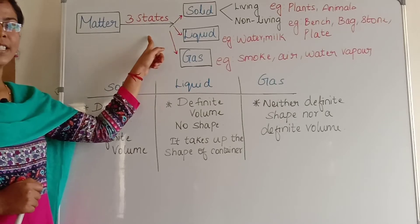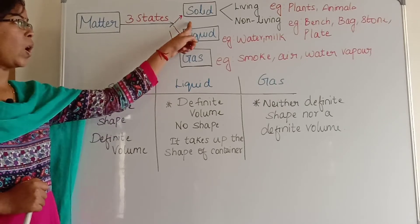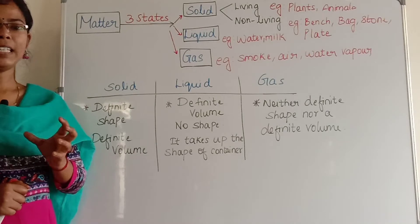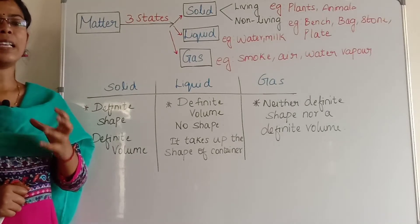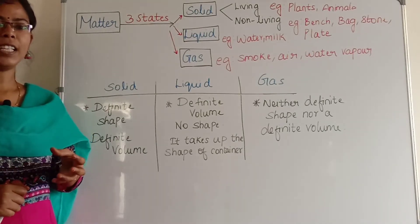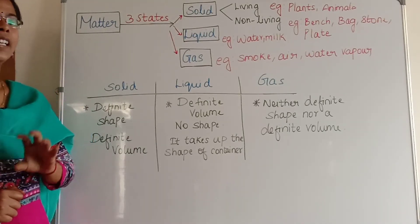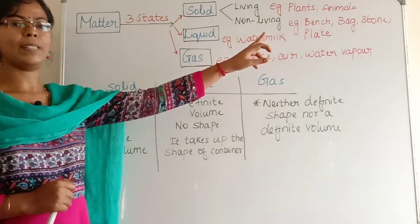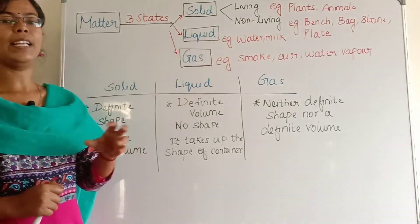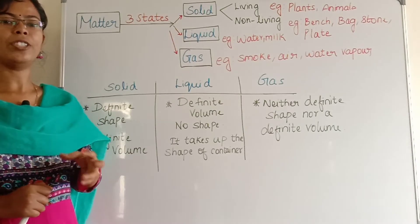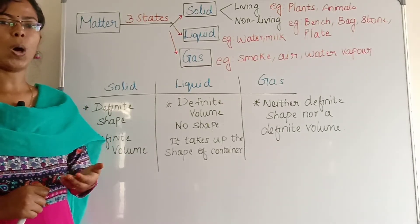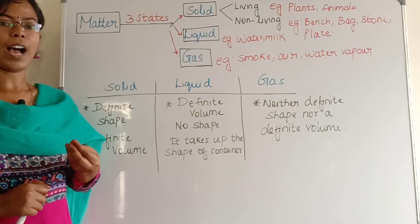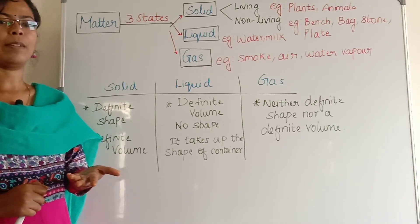Matter is in three different states: solid, liquid, and gas. Solid is a thing, it is a substance. It can be a living thing or it can be a non-living thing. Living things, for example, plants and animals. Non-living things, for example, it can be a bench, chair, fan, rock, sand, sugar, ice cubes — anything it can be.